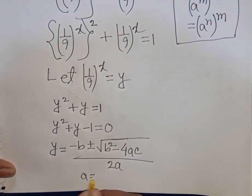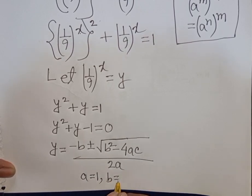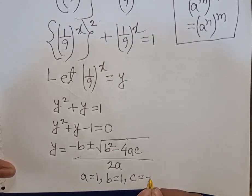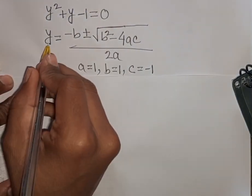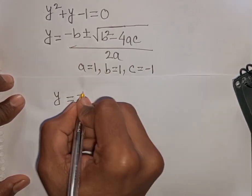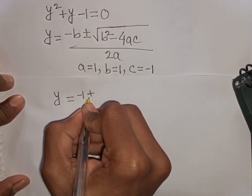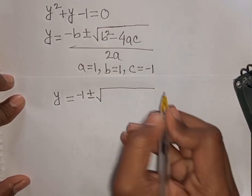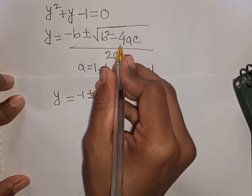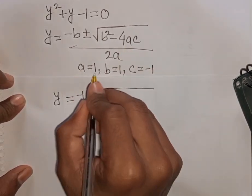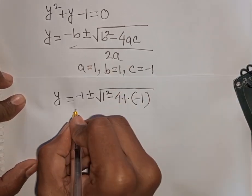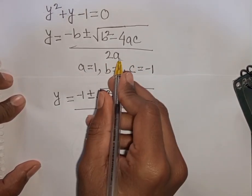Here A equals 1, B equals 1, and C equals negative 1. Substituting: y equals minus 1 plus or minus square root of 1 squared minus 4 times 1 times negative 1, divided by 2 times 1. The negative times negative gives plus, so we get 4 times 1 times 1 equals 4.